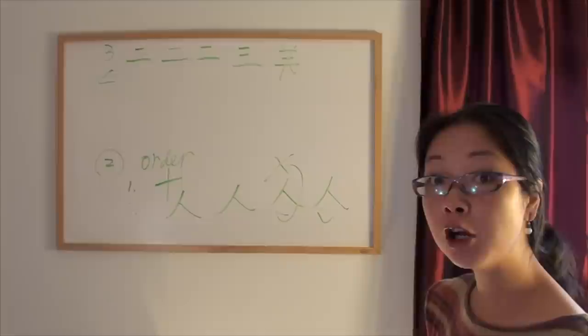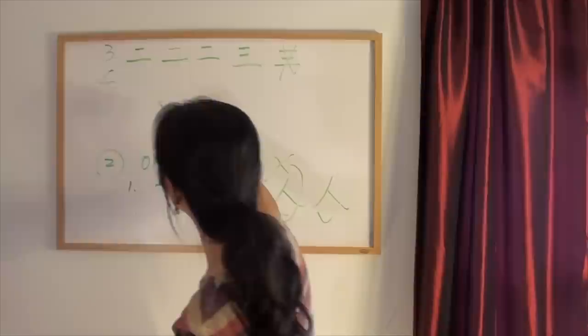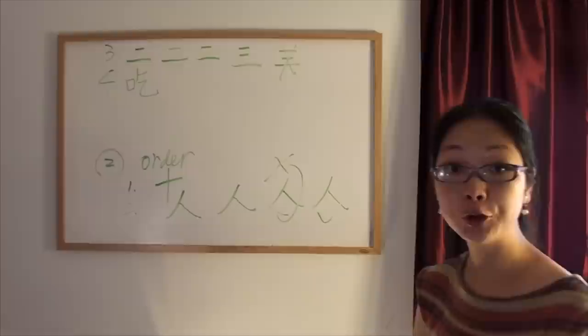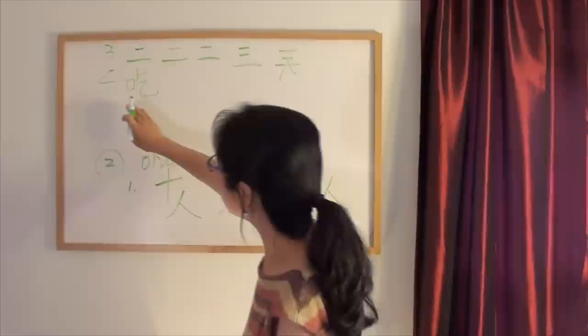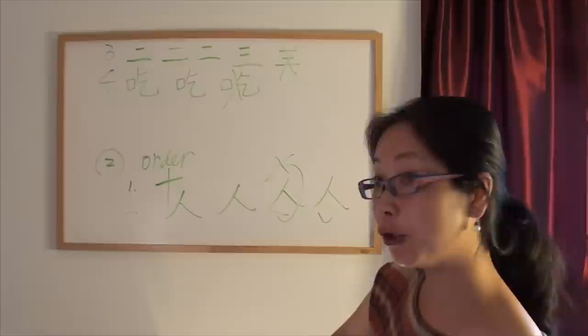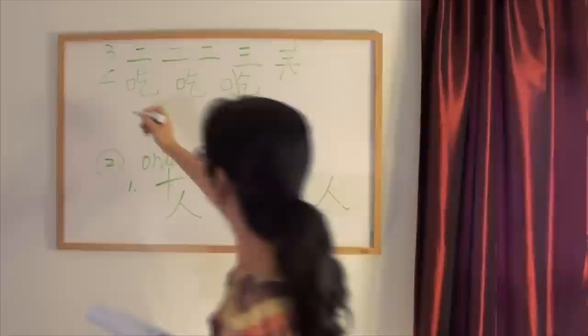Rule number four: the left part goes before the right part. Let's look at this character — chi means 'to eat.' There are two parts in this character, and we always write the left part first, then the right part. You cannot write the right part first — that's wrong. Rule number four: always move from left to right.